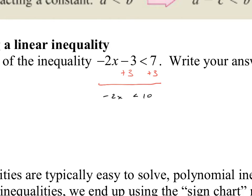I'm still trying to isolate that x value, so I'm going to divide both sides by the coefficient of negative 2. When I divide by a negative, I have to be super careful — anytime you divide by a negative, you have to flip that inequality. That's one of the most forgotten things when doing this. On the left I'd have x, and then greater than, and then this would be negative 5.